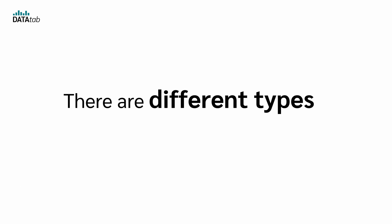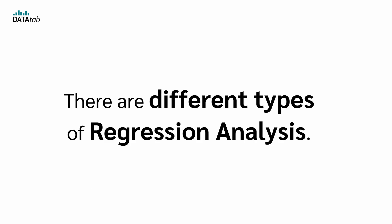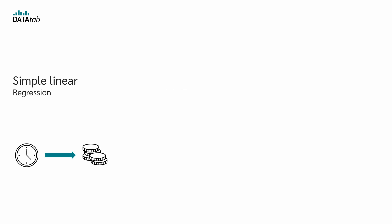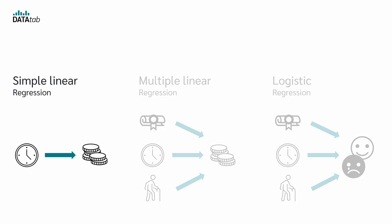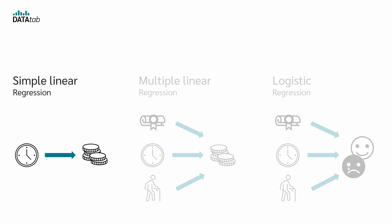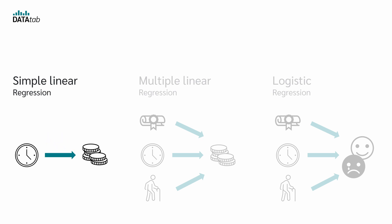Now there are different types of regression analysis. There is the simple linear, multiple linear, and logistic regression. In simple linear regression, we use just one independent variable to predict the dependent variable. For example, if we want to predict a person's salary, we use only one variable — either whether a person has studied or not, the weekly working hours, or the age of a person.